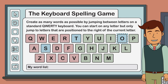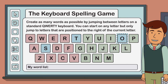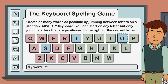Our sequence of letters is now S, T, O — and we're well on our way to completing a word. From the letter O, there are now only two letters that we can jump to: the letter L or the letter P.